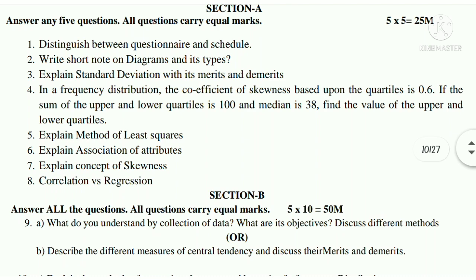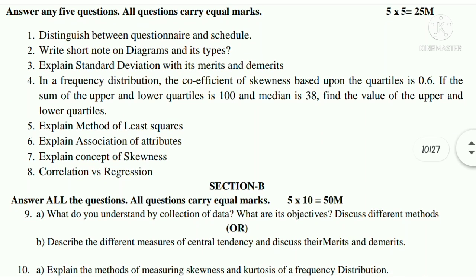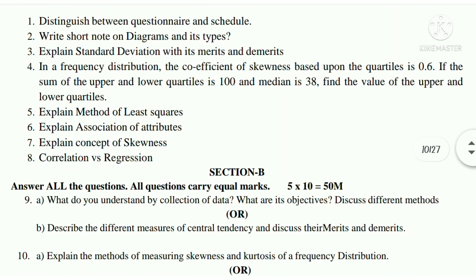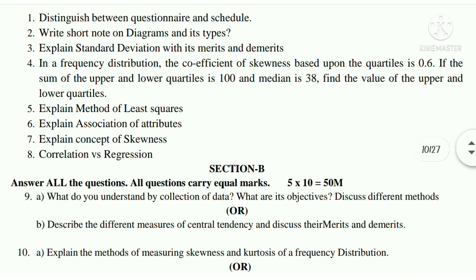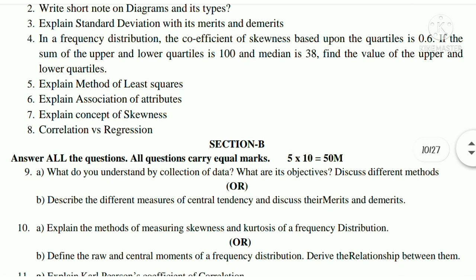Tenth A: explain the methods of measuring skewness and kurtosis of a frequency distribution. Tenth B: define the raw and central moments of a frequency distribution. Derive the relationship between them.